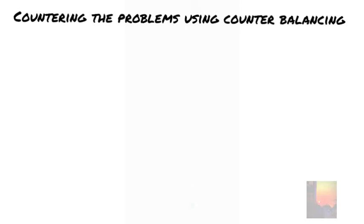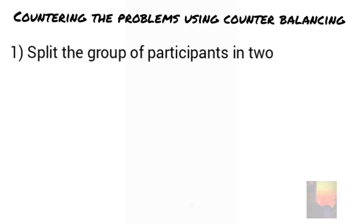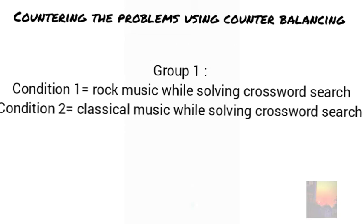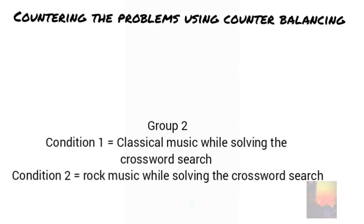So how does one use counterbalancing? In this experiment we have 30 participants. We are going to divide these participants into two groups. The first group of 15 participants will listen to rock music followed by classical music while solving the crossword search. The 15 participants of group 2 will do the opposite of group 1. Each participant does classical music followed by rock when solving the crossword search.